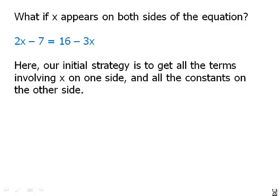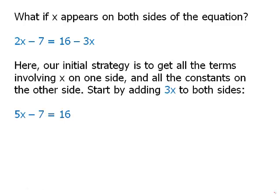So here we're going to begin by adding 3x to both sides. So on the right side, the x's will just cancel. And on the left side, we get 2x plus 3x equals 5x.